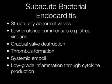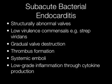Subacute bacterial endocarditis occurs on structurally abnormal valves. It is caused by low virulence commensals. There is gradual valve destruction, and thrombus forms resulting in systemic embolization and low grade inflammation through cytokine production.